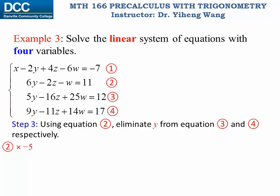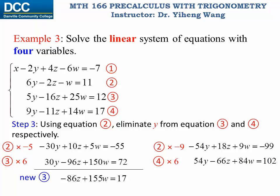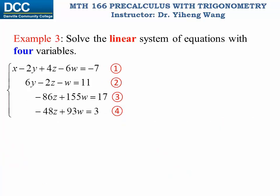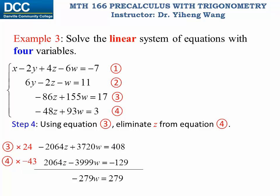So we find the least common multiple for equations two and three. Equation two multiplied by negative five, equation three multiplied by six. Adding them together cancels out y, giving a new equation three. Same thing for equation four: equation two multiplied by negative nine, equation four multiplied by six. The coefficients of y only differ in sign, so adding them together gives a new equation four. Now I only need to eliminate z from equation four using equation three, and the resulting equation simplifies to a direct solution: w equals negative one, which is my new equation four.